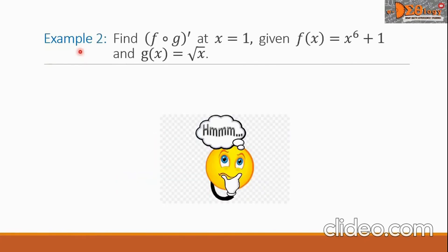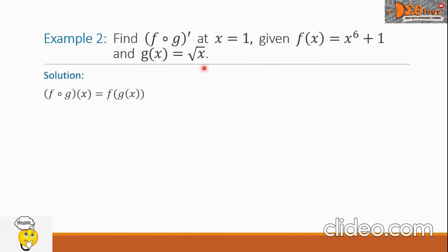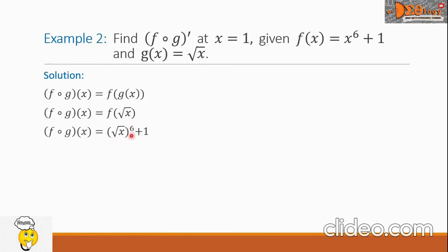Example 2: Find f composite g prime at x equals 1, given f of x equals x raised to the 6th plus 1, and g of x equals square root of x. For our solution, let us show that f composite g of x equals f of g of x. Substituting g of x, we have f of the square root of x, which simplifies to the square root of x raised to the 6th plus 1, giving us x cubed plus 1.